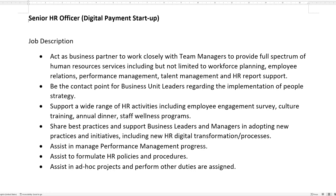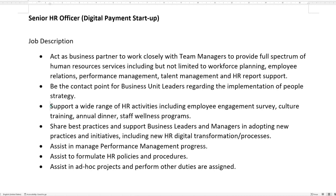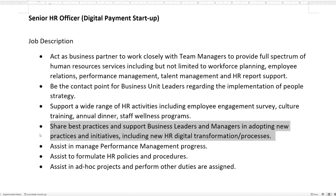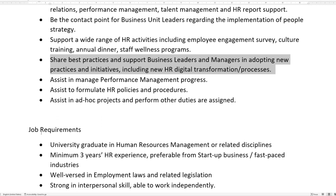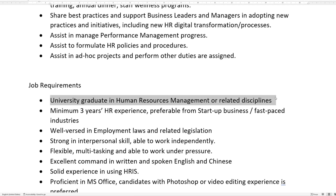The last JD is for a senior HR officer position at a startup. Some of the key points include: act as a business partner to work closely with team managers to provide a full spectrum of human resources services, including workforce planning, employee relations, performance management, talent management, and HR reporting; support a wide range of HR activities including employee engagement surveys, culture training, annual dinners, and staff wellness programs; share best practices and support business leaders in adopting new practices and initiatives including HR digital transformation and new processes. Requirements include a minimum of three years of HR experience, preferably from a startup or fast-paced industry, and a university degree in human resources management or related disciplines.